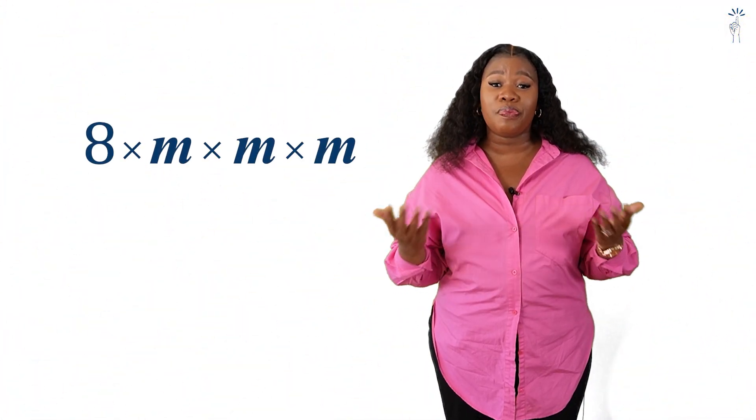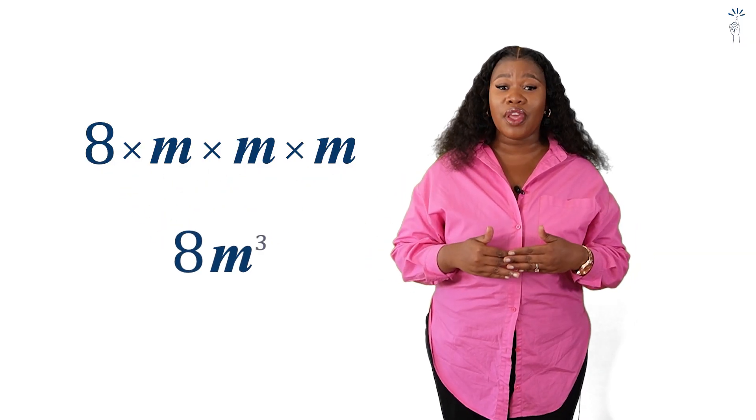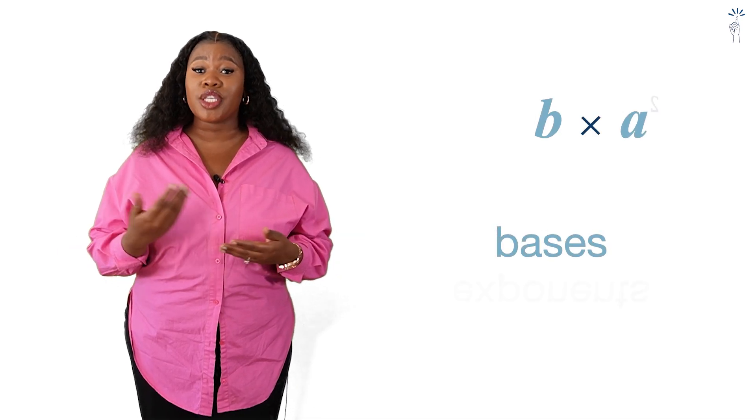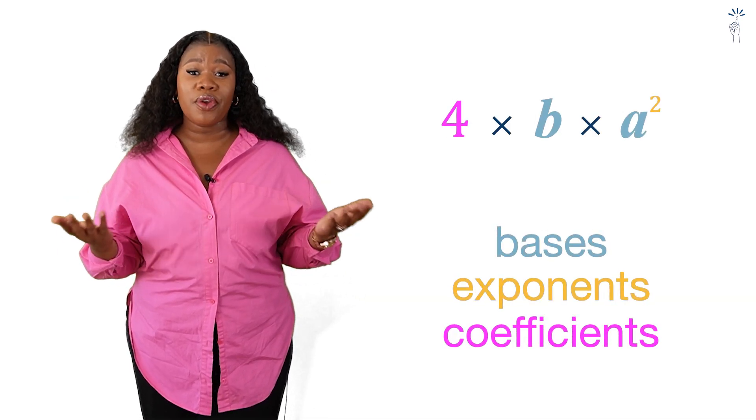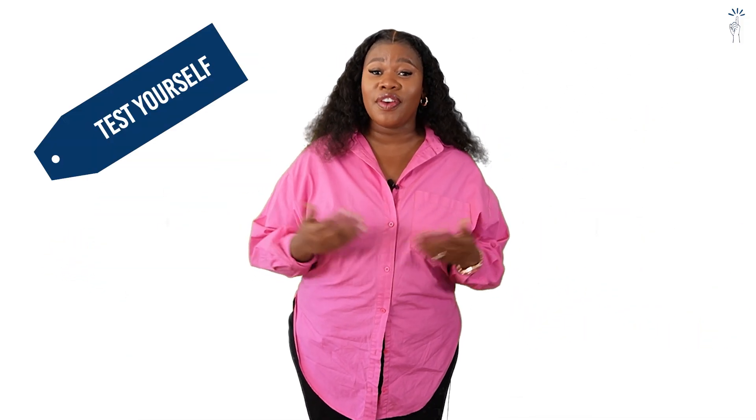Okay grade nines, we have come to the end of our first lesson on exponents. We've seen how exponents make repeated multiplication shorter and neater and how they work with both numbers and variables. We've also learned about bases, exponents, and coefficients and why we write variables in alphabetical order.